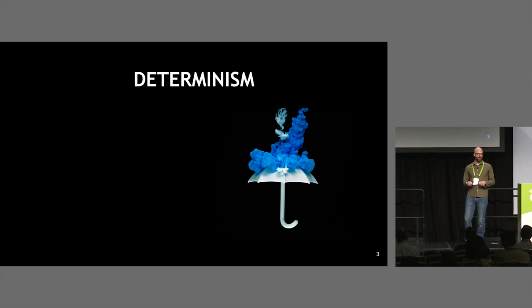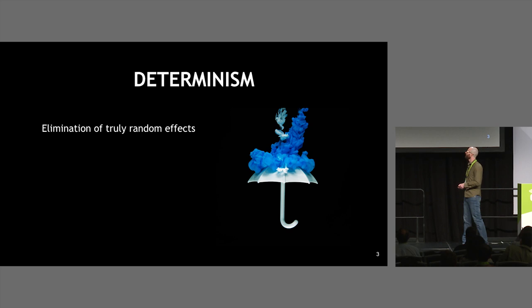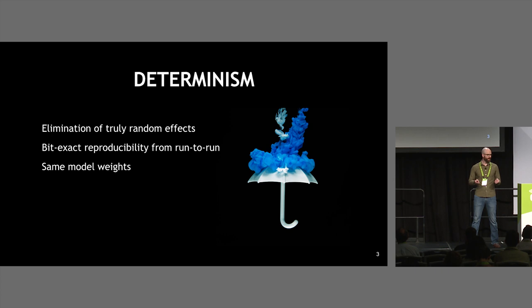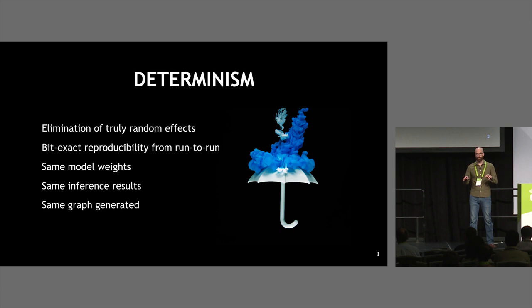Before digging deep, I want to define what I mean by determinism in deep learning. What I mean is the elimination of truly random effects to get bit-exact, reproducible output from your system run to run. When you're training a model, that means the model has exactly the same weights at the end of training. When inferring, given the same input, you should get exactly the same inference. And when generating graphs like with TensorRT, you should get exactly the same graph given all the same parameters.